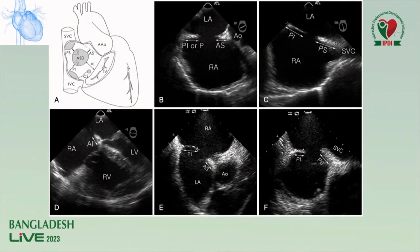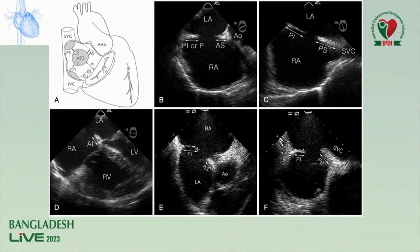These are different TEE views showing ASD and its rims. The aortic rim and SVC rim are visible, as is the IVC rim. The 4-chamber view shows the AV valve rim. In the short axis view at 30 degrees, we can identify the aortic rim, posterior rim, SVC rim, and IVC rim.